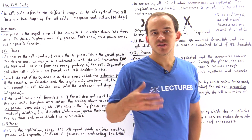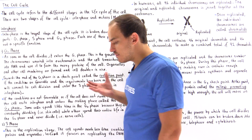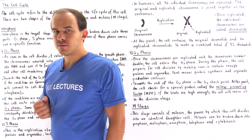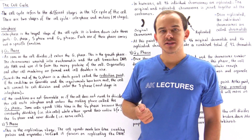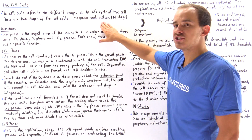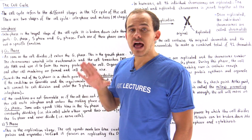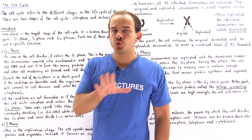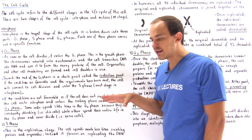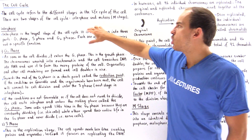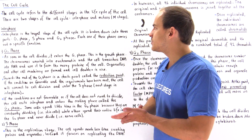The cell cycle of an animal cell refers to the different stages of the life cycle of that cell. For an animal cell, there are two main stages: the interphase and the M stage, also known as mitosis. Mitosis is the process by which the cell actually divides into two identical cells, and we're going to focus on that stage in the next lecture. In this lecture, we're going to discuss the process of interphase.